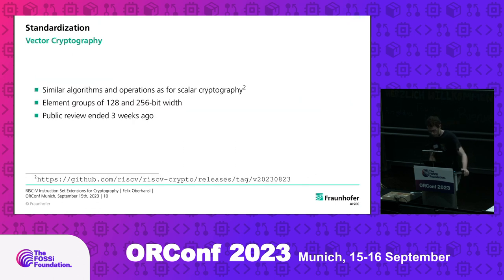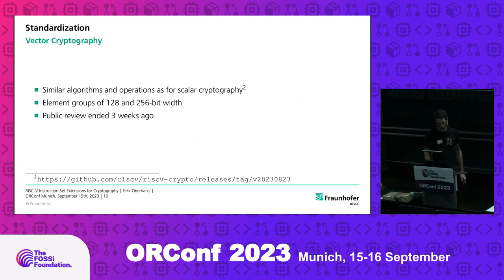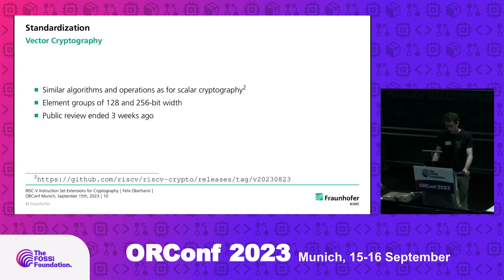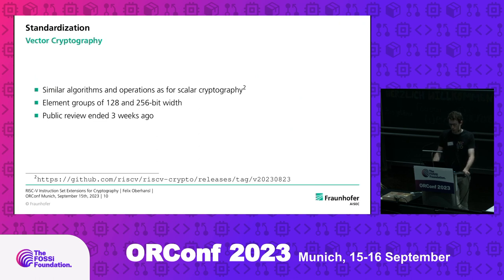The extension task group is also concerned with extensions for vector cryptography. There, they are planning to do similar algorithms as for scalar cryptography — basic bit manipulations but also algorithms like AES — but not for scalars, rather for elements of scalars which have a group width of 128 or 256 bits. The public review for those ended just three weeks ago, so we can expect them to be ratified sometime in the near future.